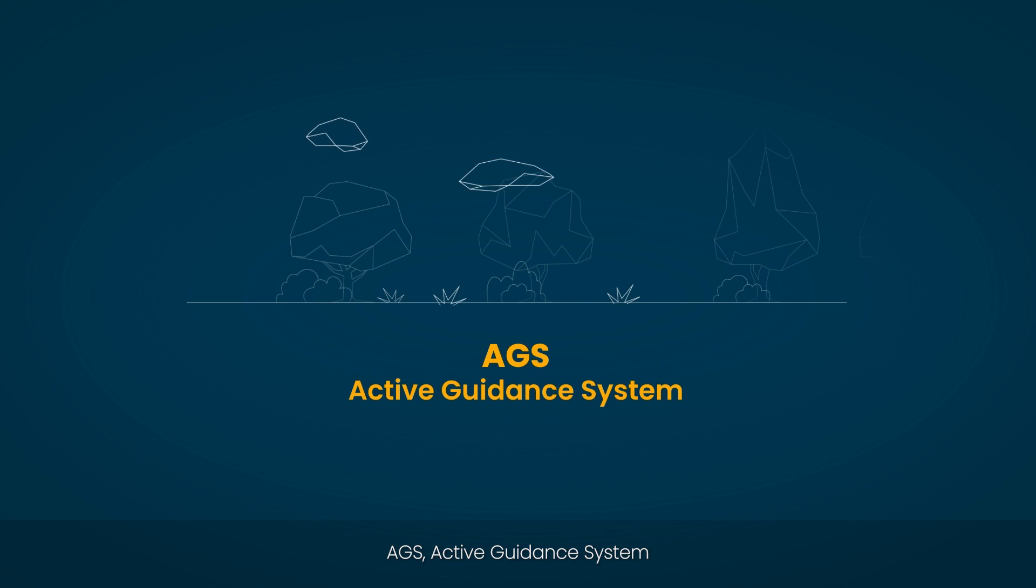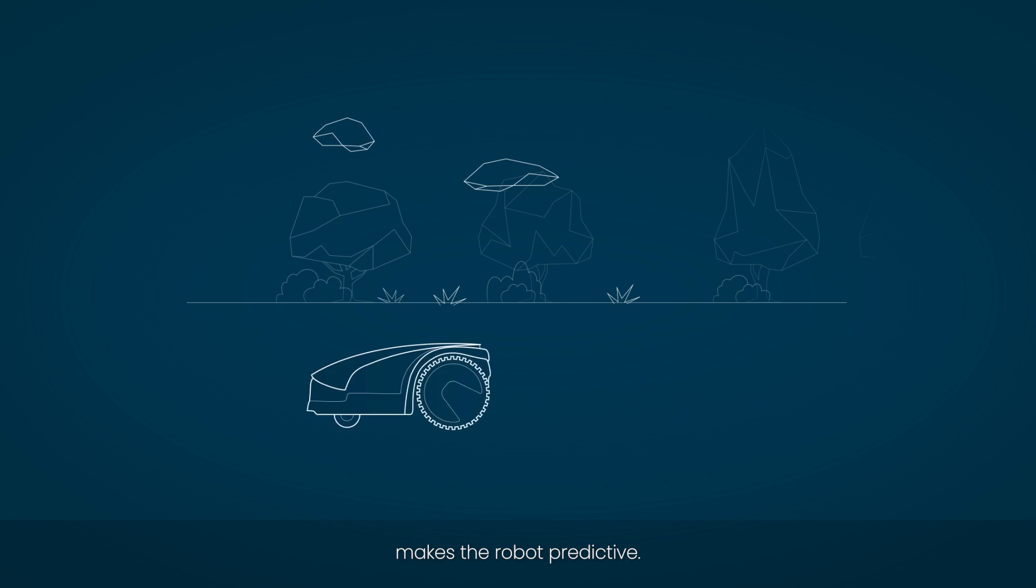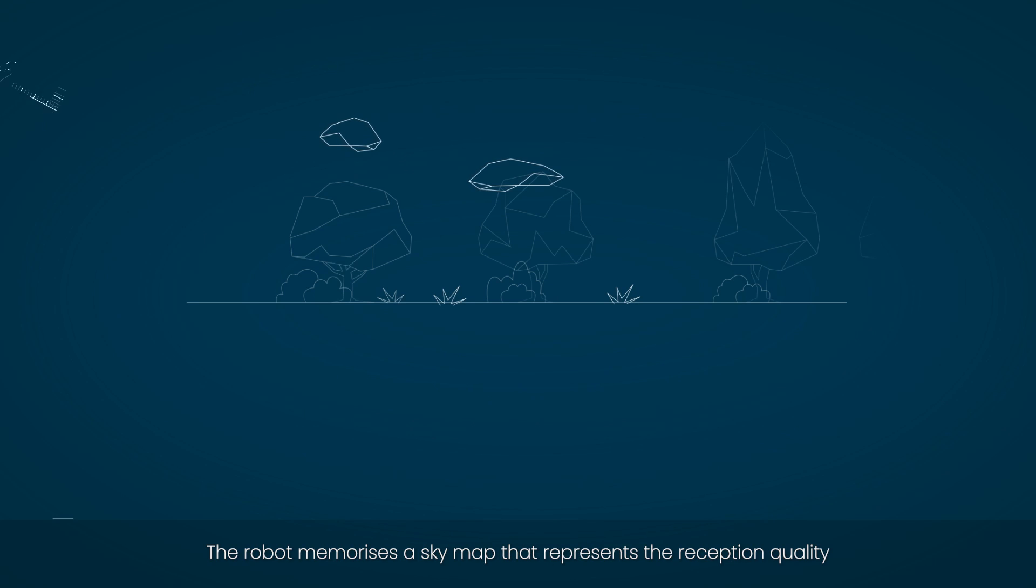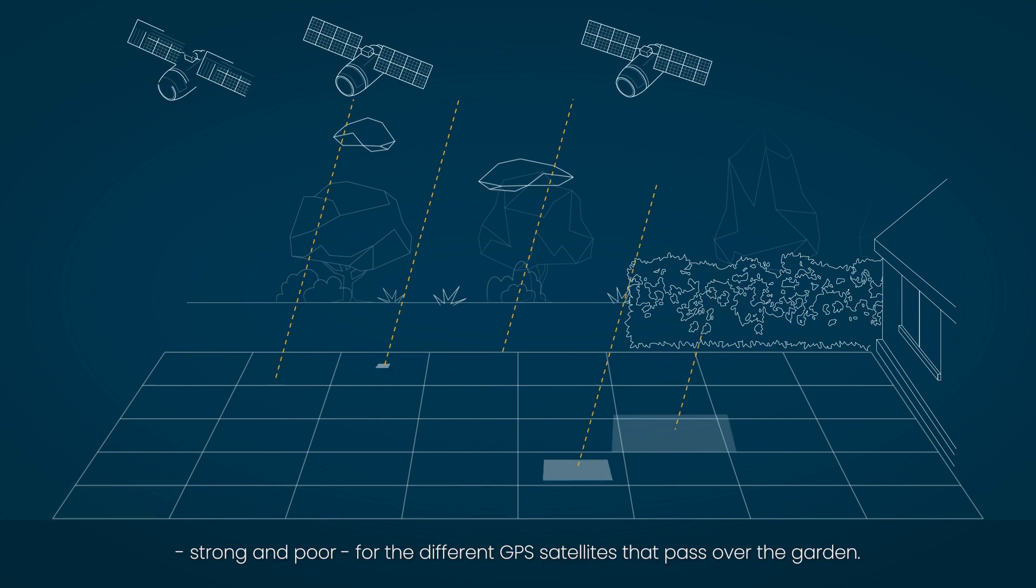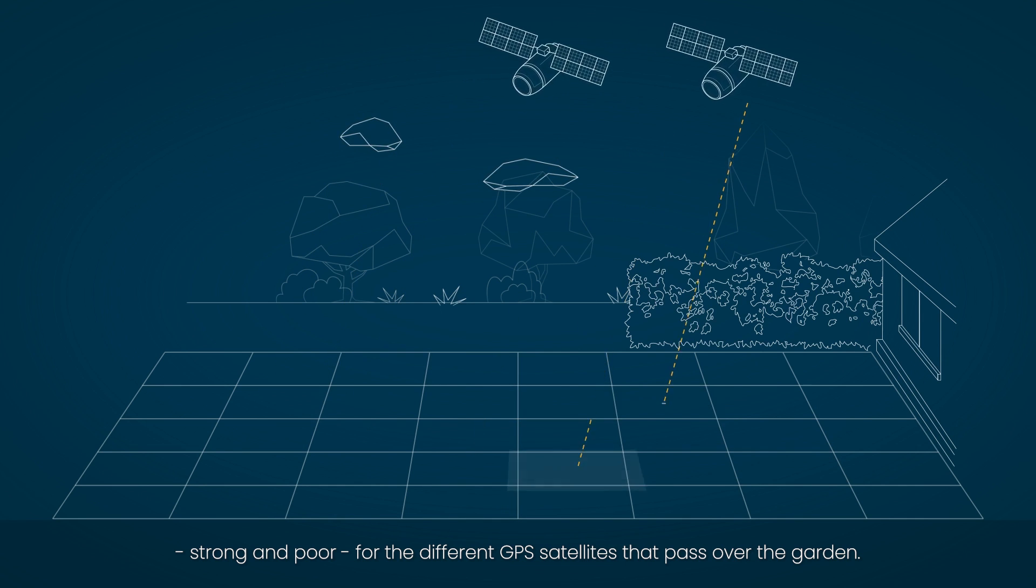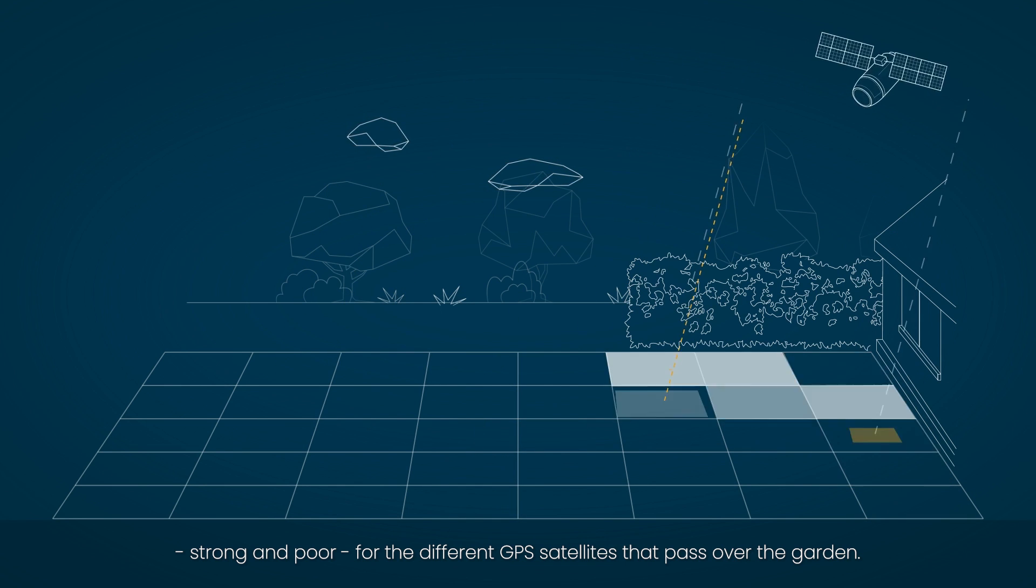AGS, Active Guidance System, makes the robot predictive. The robot memorizes a sky map that represents the reception quality, strong and poor, for the different GPS satellites that pass over the garden.